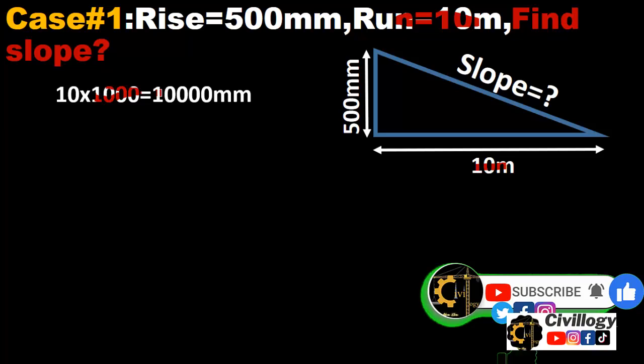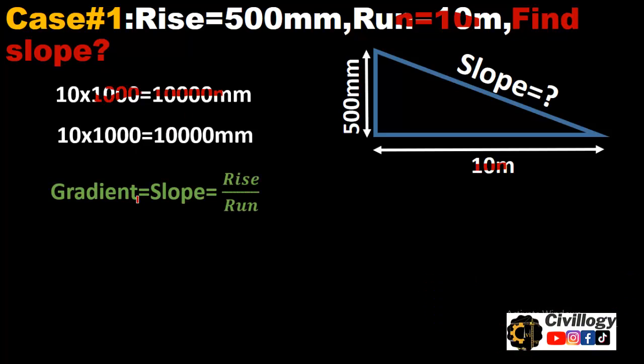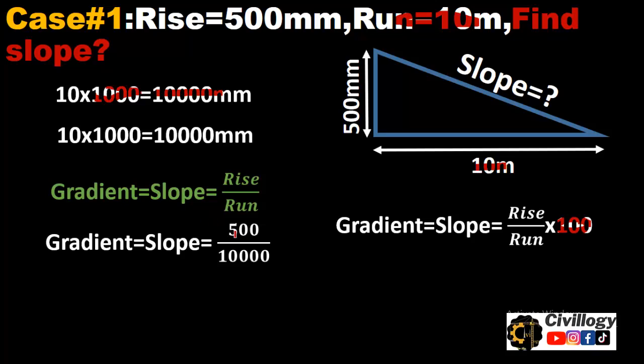Then gradient is equal to—gradient or slope are more or less the same—so gradient or slope is equal to rise divided by run. And if we express it in the form of percentage, then this factor will be added, which is 100. So rise divided by run.